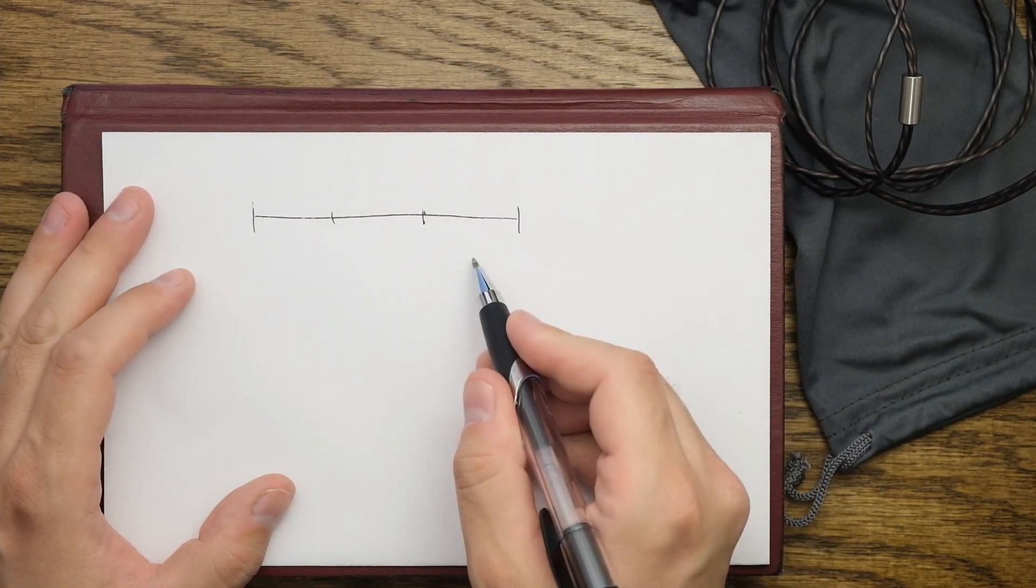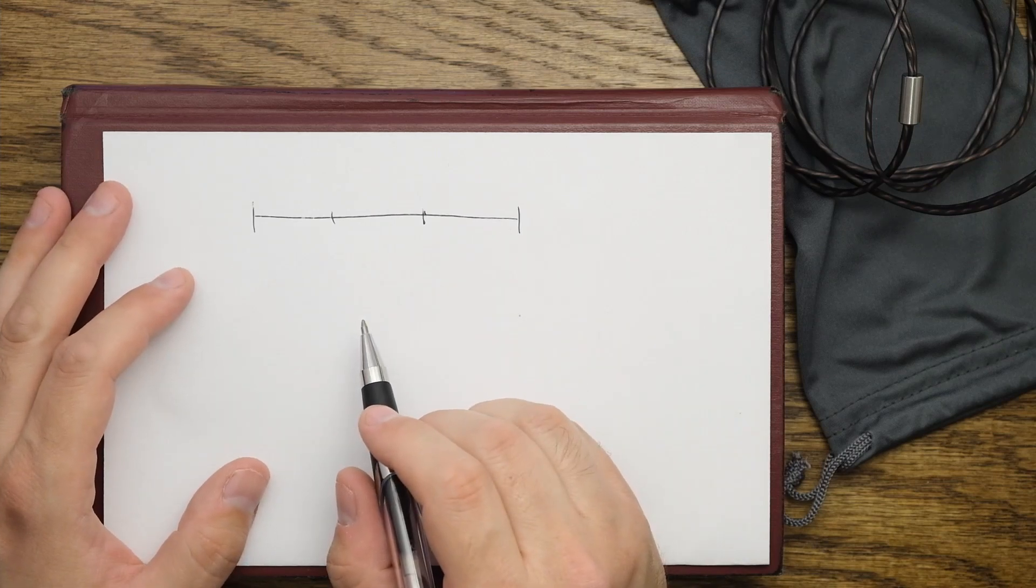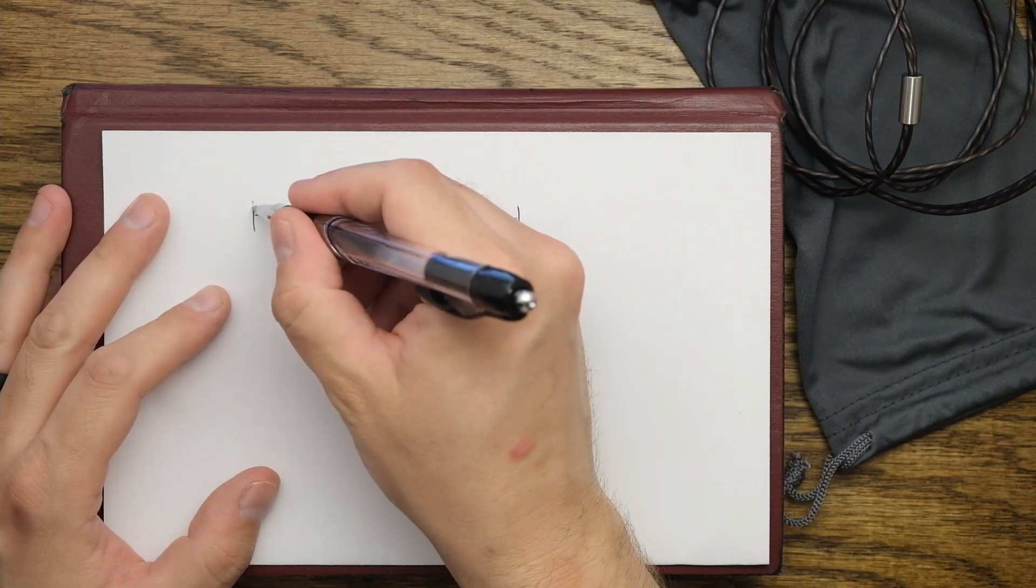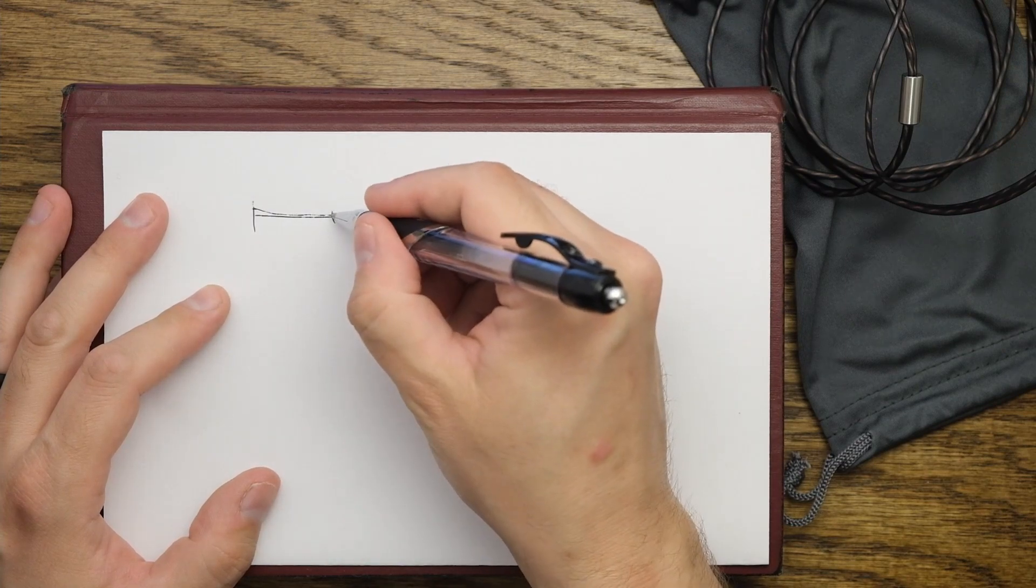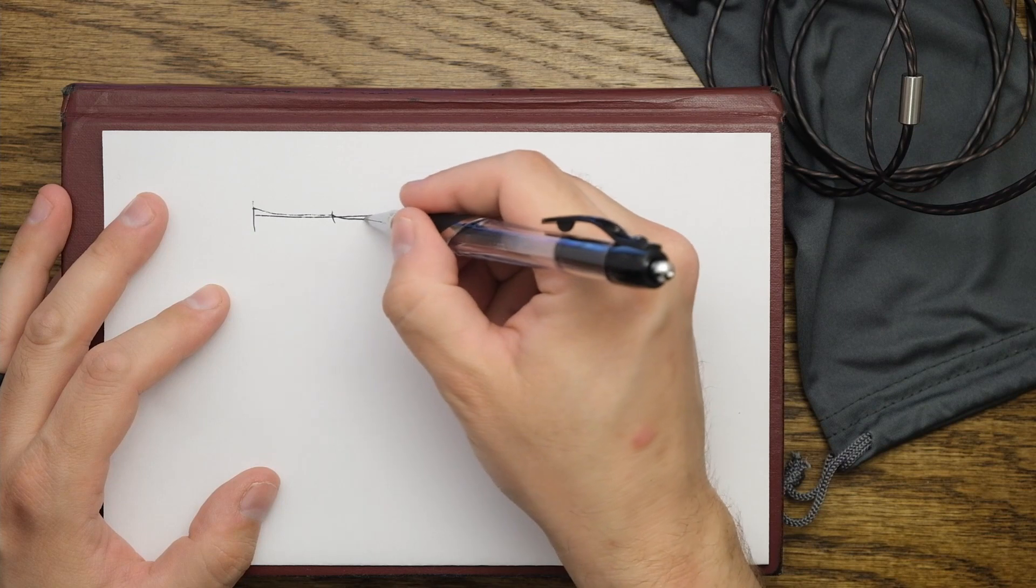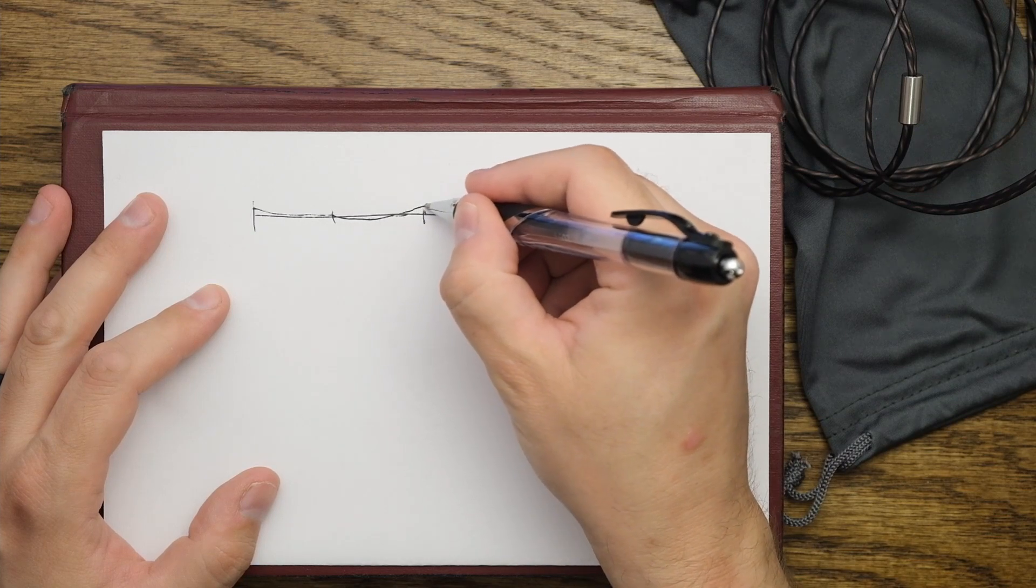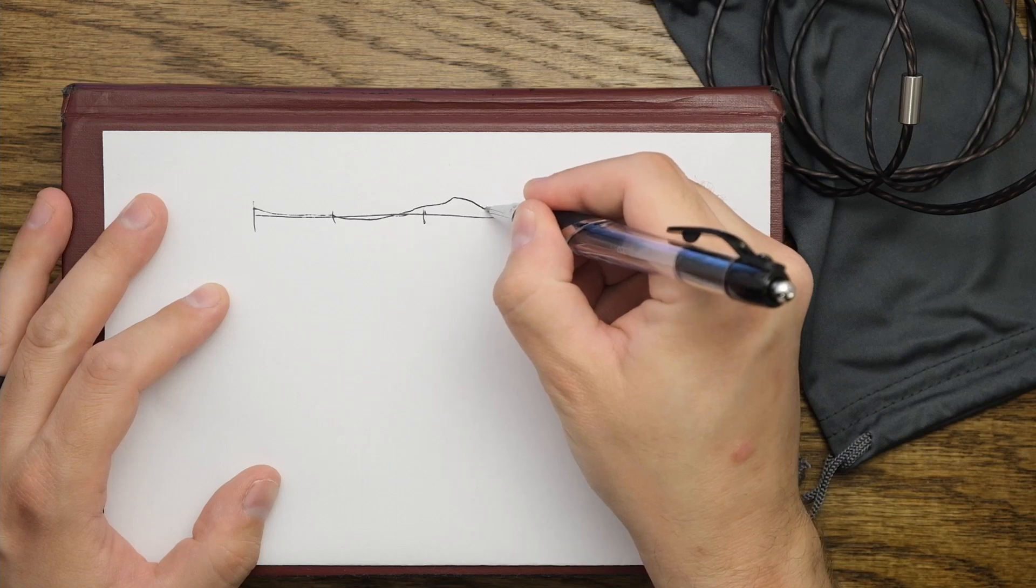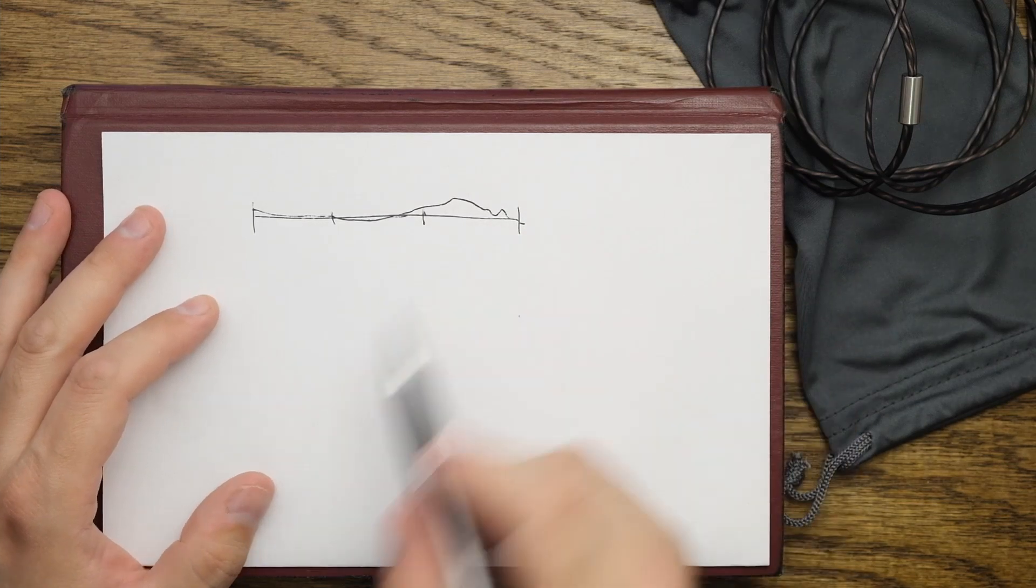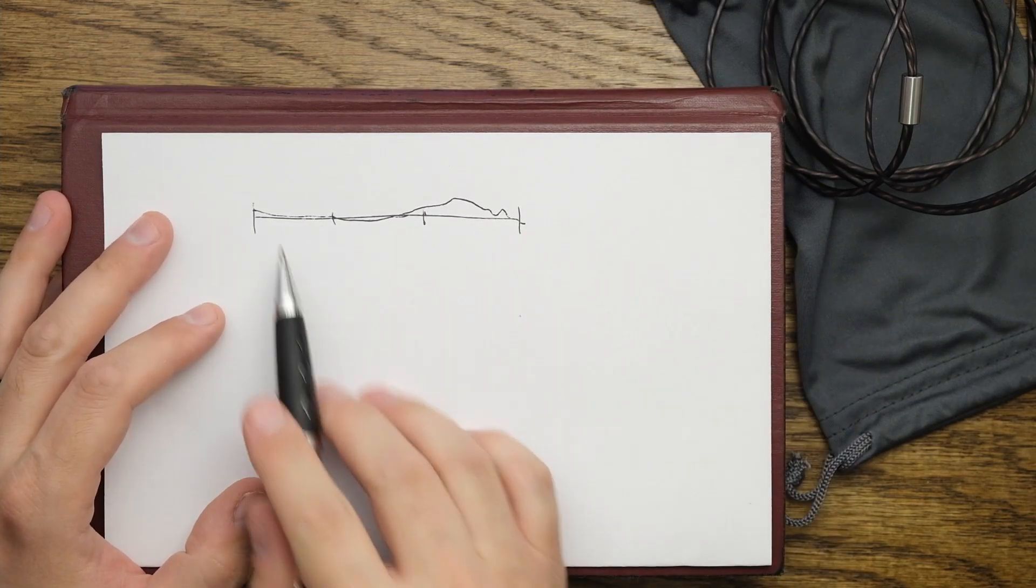The frequency response graph here, you've got low, mids, and highs. The way I would describe the sound of these is slightly maybe sub-bass oriented and then very, very linear in the mids and low mids. And then the treble kind of scoops up. And at 4 kilohertz, there's a bit of a peak. And then it kind of goes back down from the treble. Again, this is just a rough graph, but you get the idea.